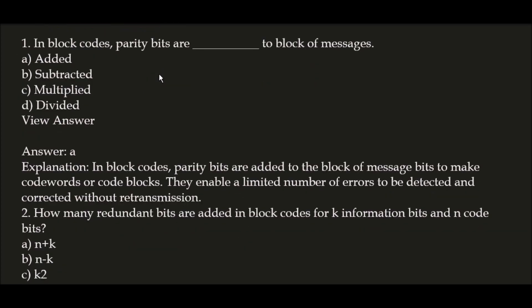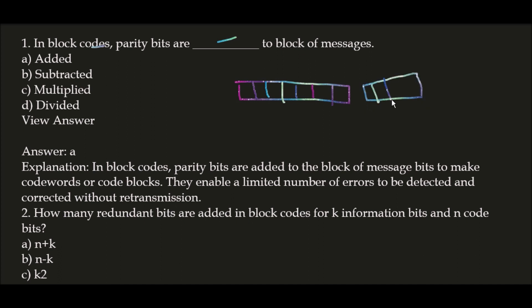The first question: in block codes, parity bits are _____ to block of messages. Options: A) added, B) subtracted, C) multiplied, D) divided. According to block codes, parity bits are added to the block of message bits to make code words or code blocks in sequential manner.